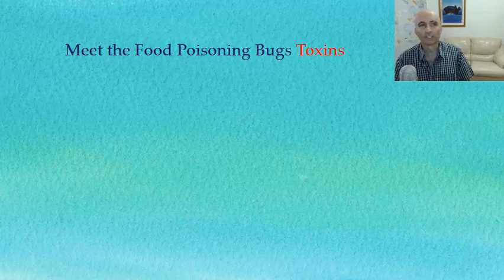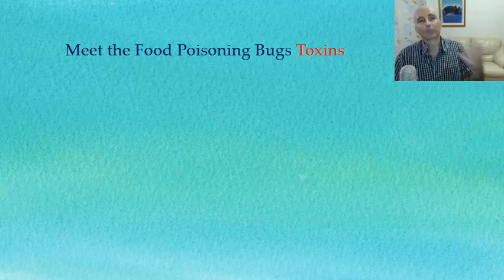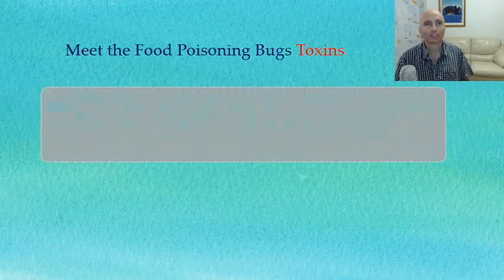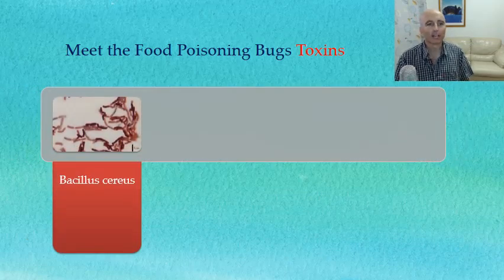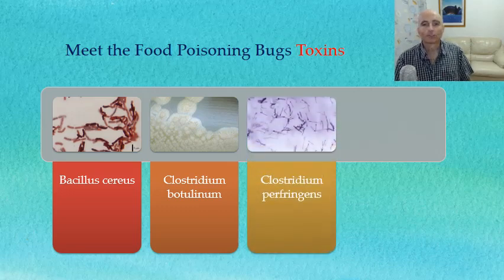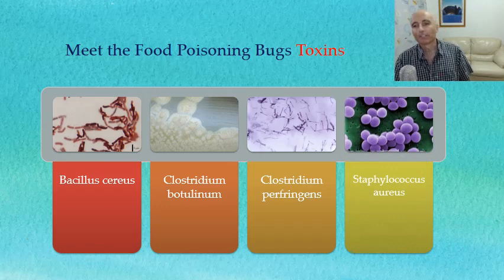If that wasn't enough, it's time to meet the food poisoning bugs that are toxins. The first group were bacterial bugs. With these toxin-producing bugs, it's actually the toxin they put out which makes you sick. They are: Bacillus cereus, Clostridium botulinum, Clostridium perfringens, and Staphylococcus aureus.